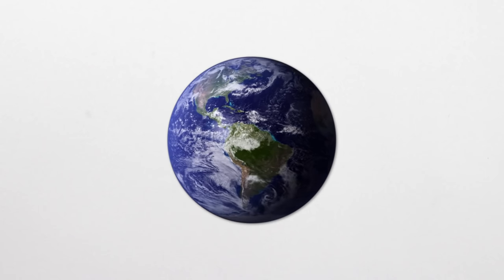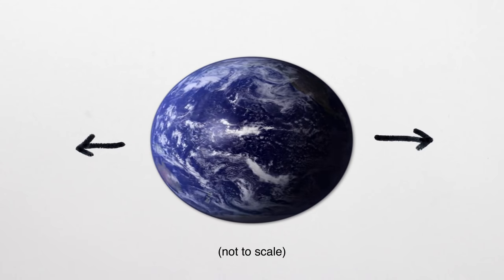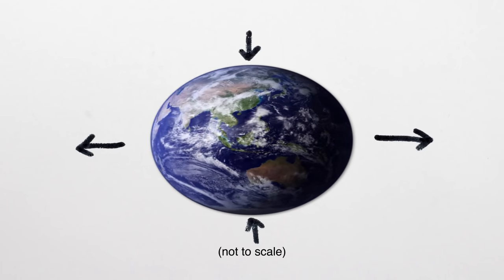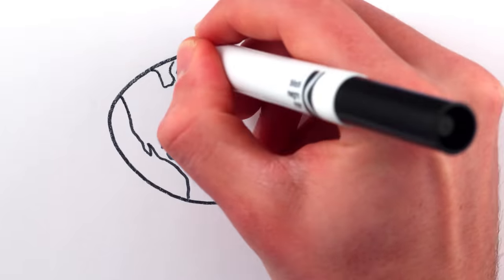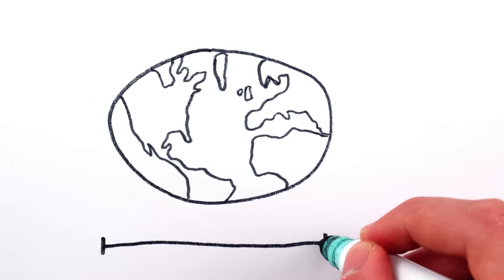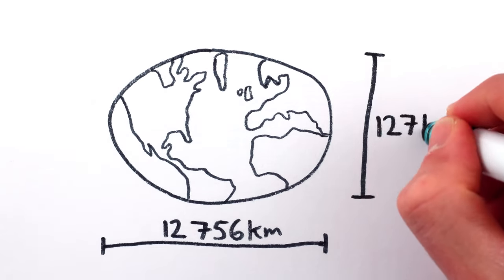It's spinning, so bits closer to the equator are thrown out by centrifugal effects, and the poles get squashed in a bit. In fact, the Earth is so non-spherical that it's 42 kilometers farther across at the equator than from pole to pole.